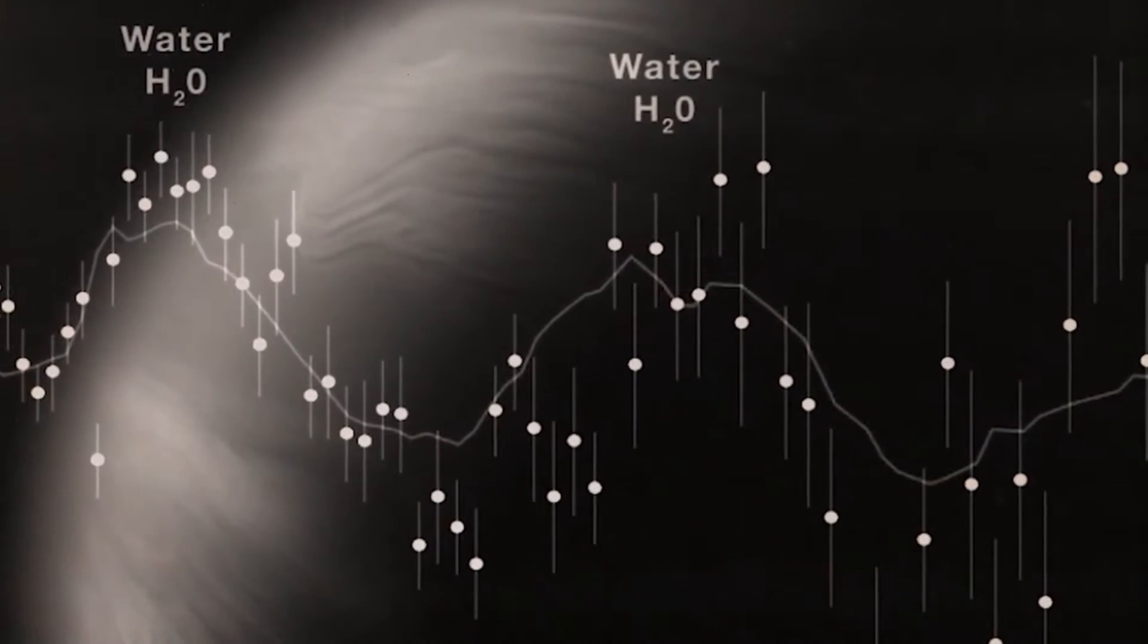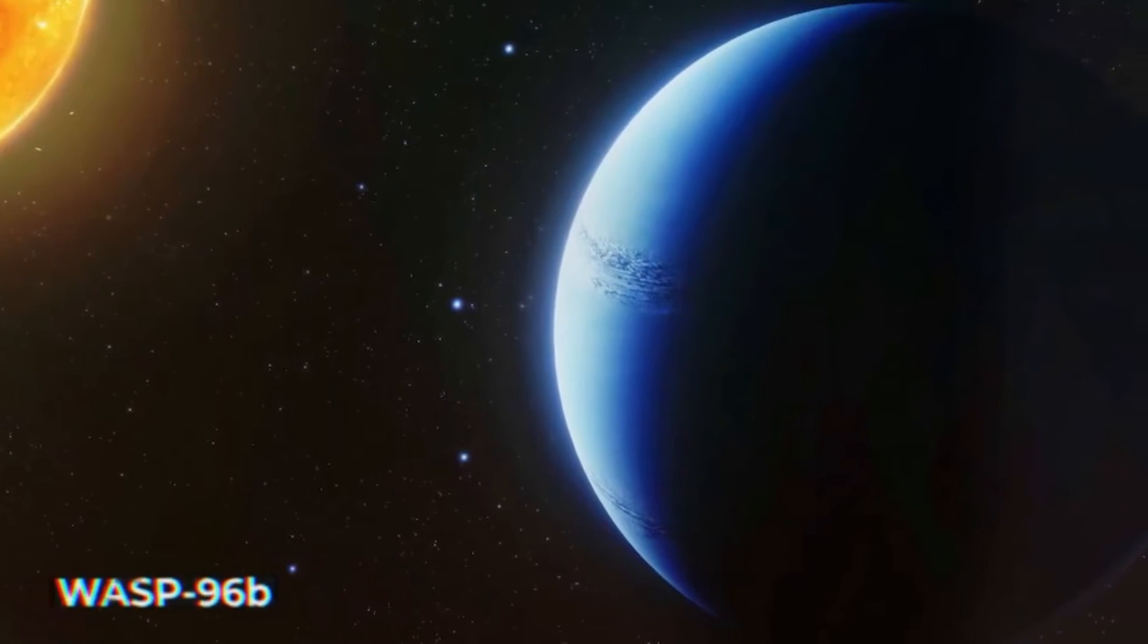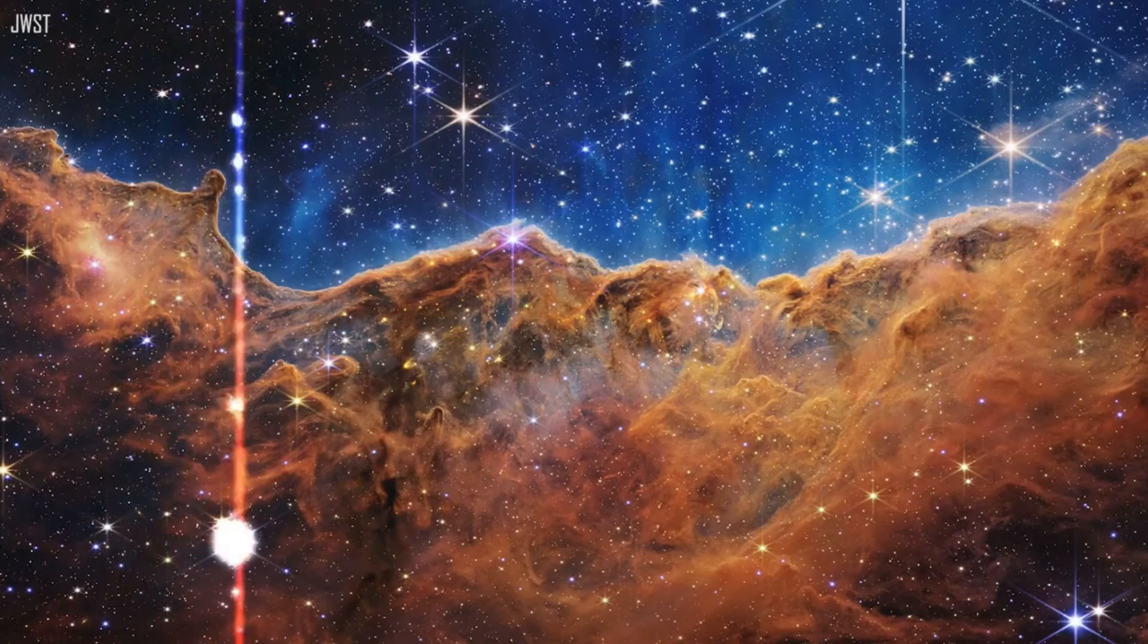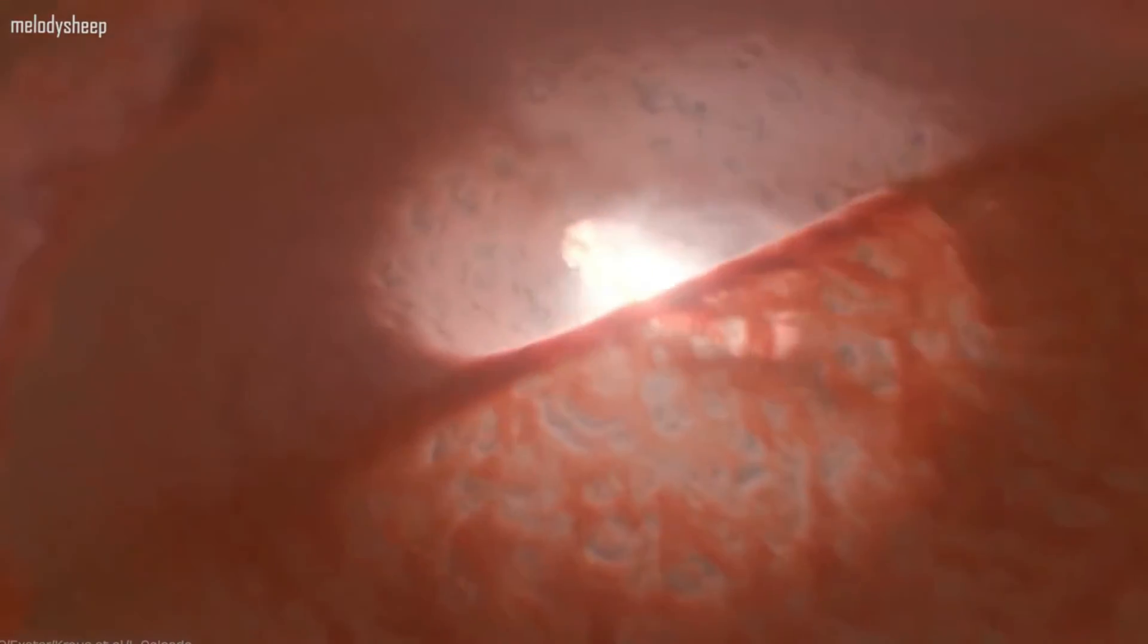In addition, because the planet orbits so close to its host star, it's bombarded with intense ultraviolet radiation. The radiation can erode any potential atmosphere on the planet, making it even more difficult to study.